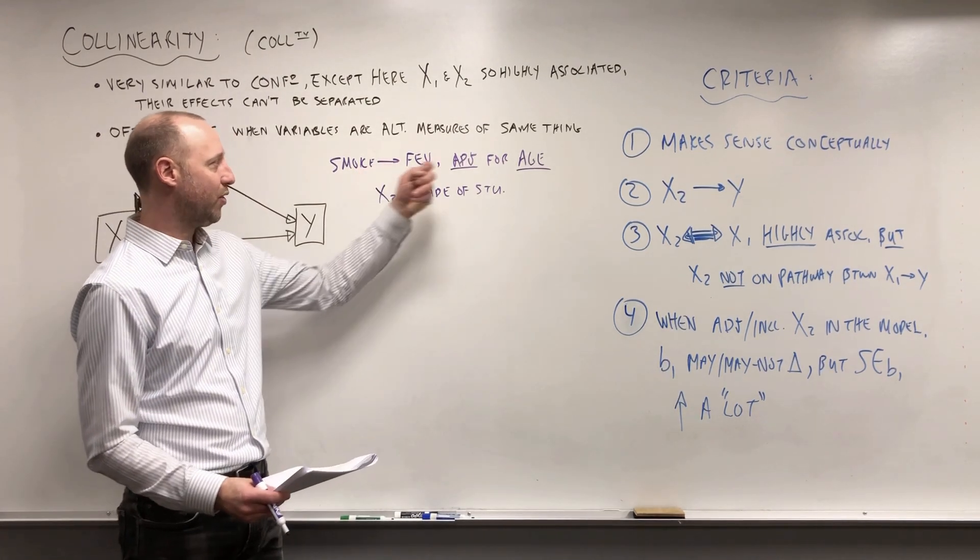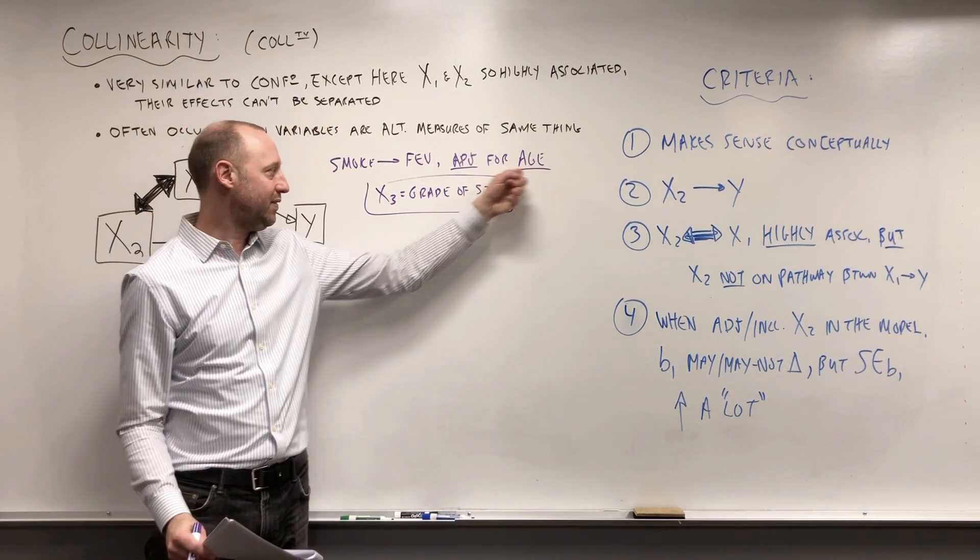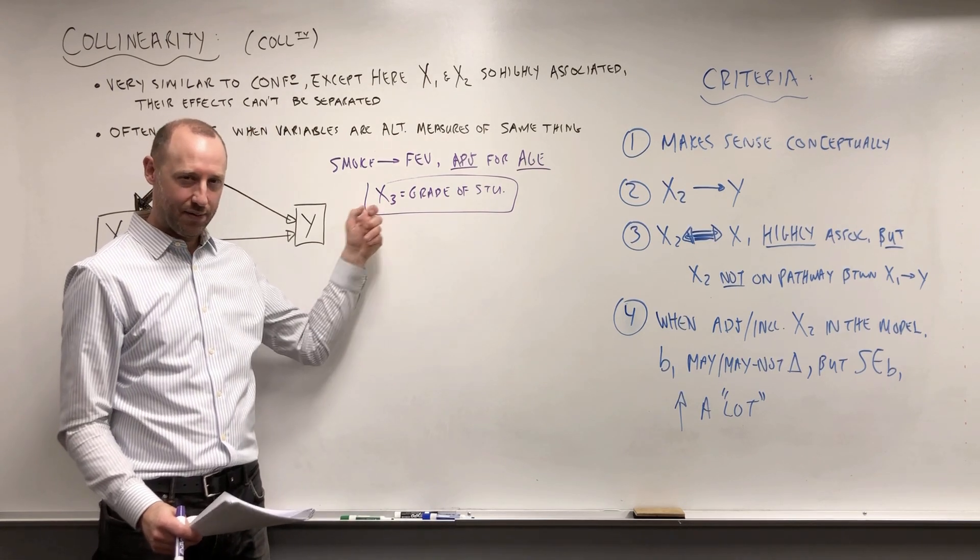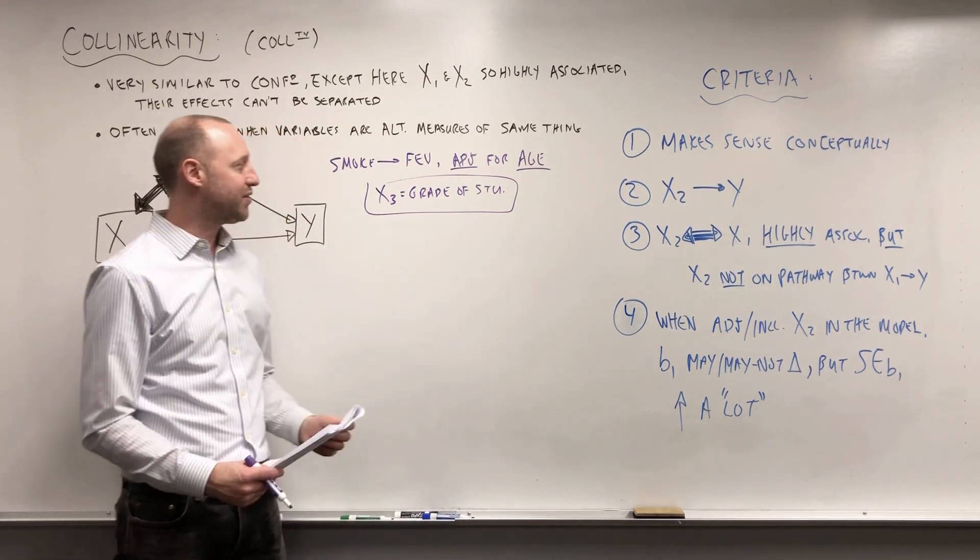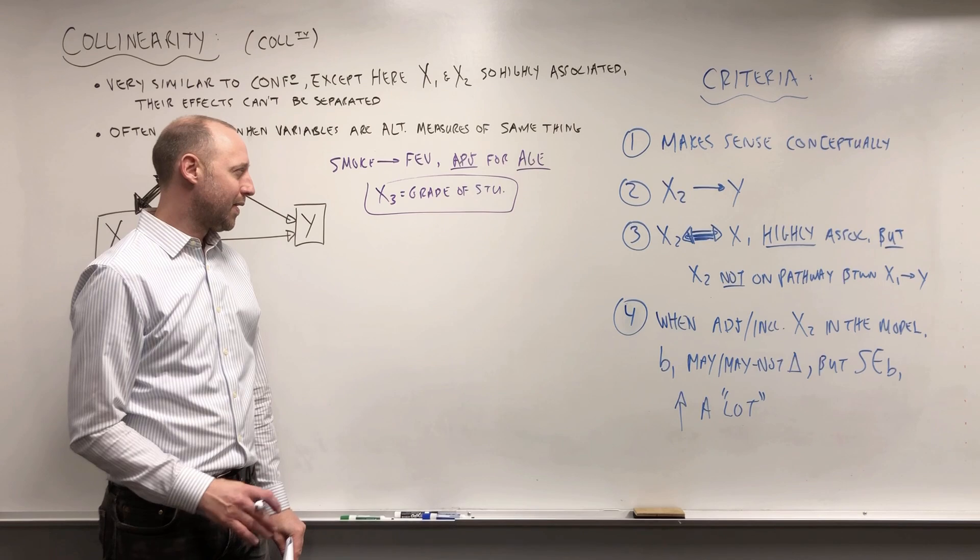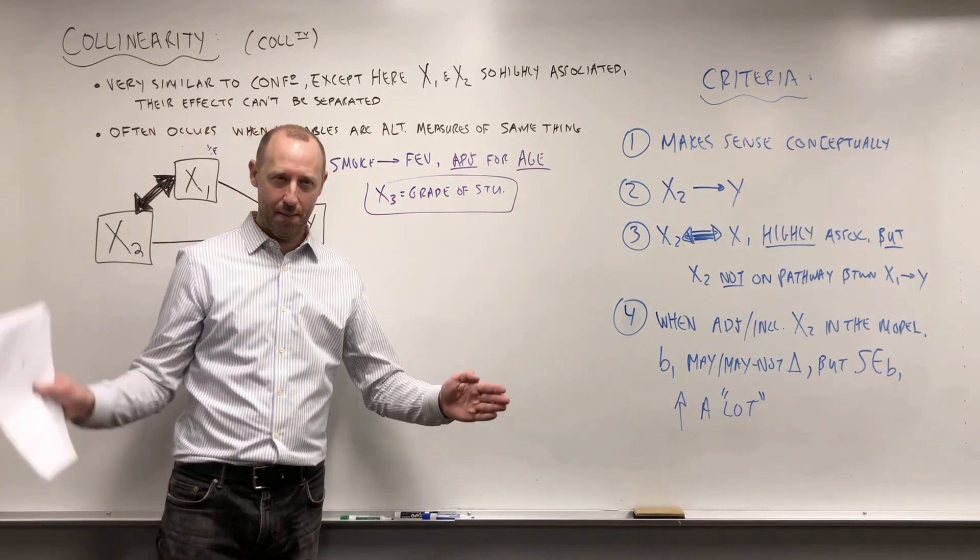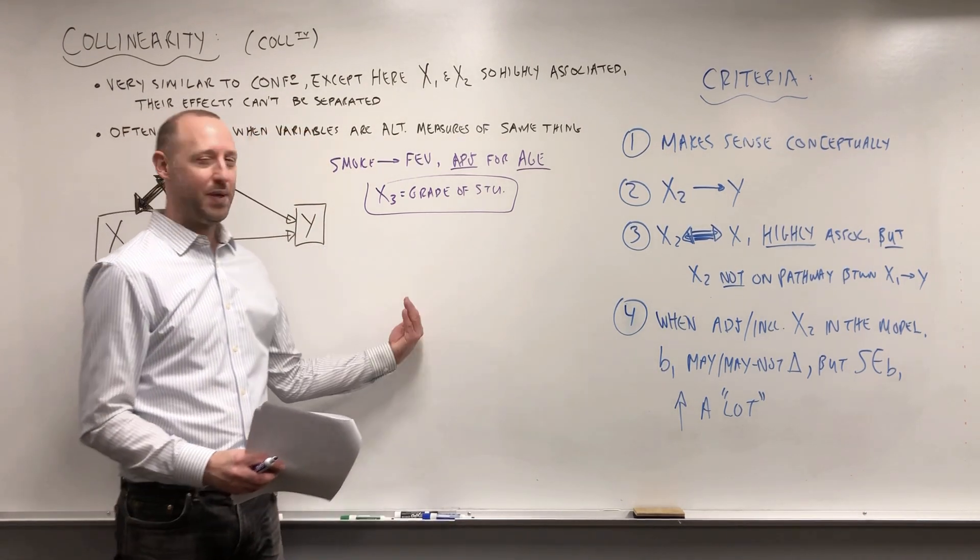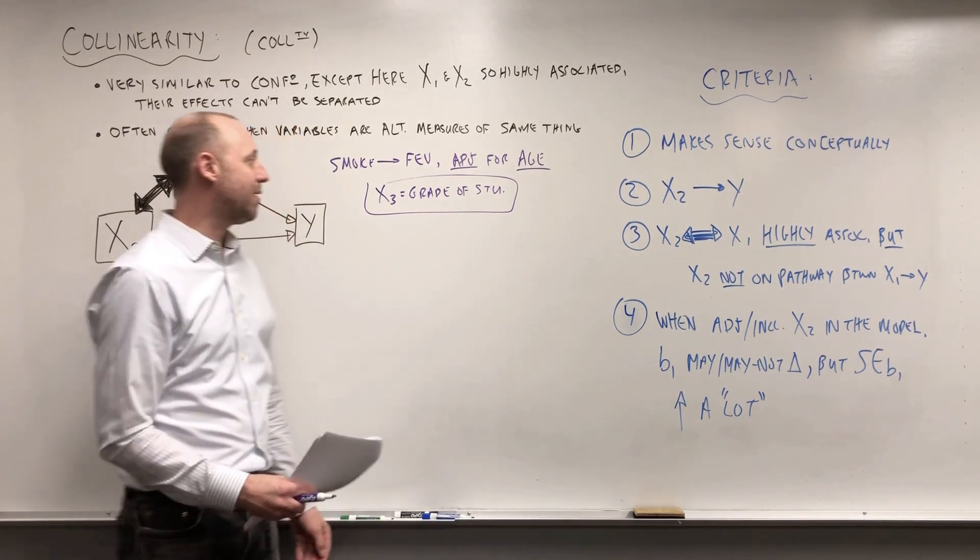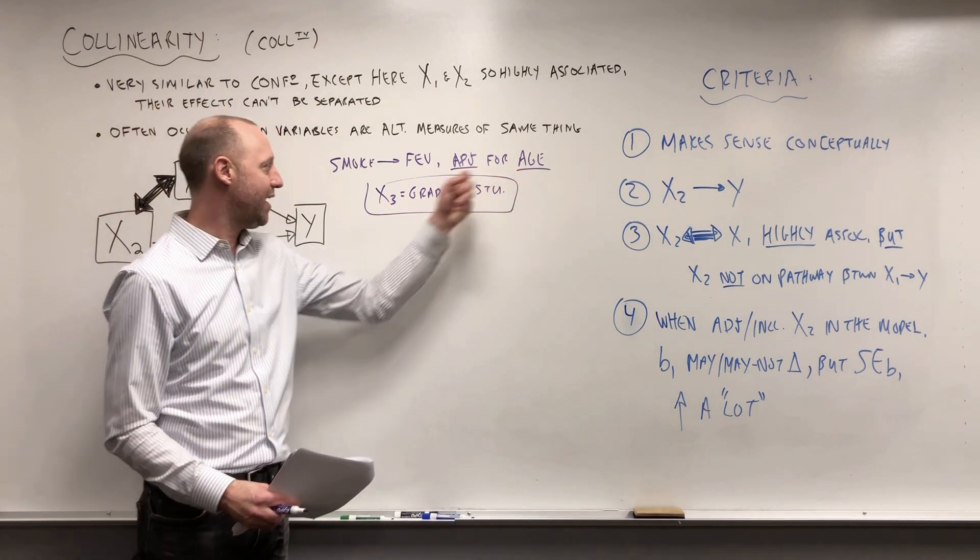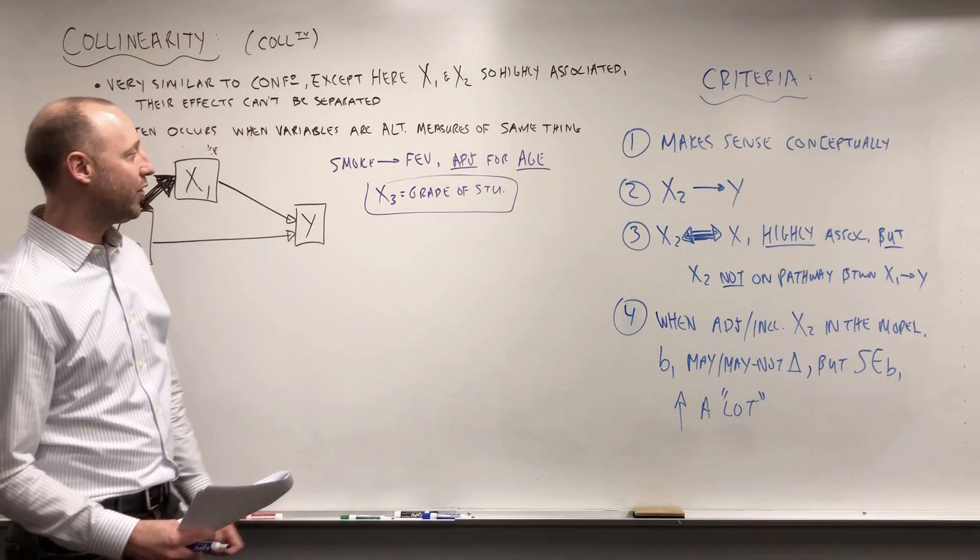If we want to adjust the smoke effect for age and we also have this other potential variable grade, the age of a student and the grade they're in are going to be highly associated. They're not exactly the same—some students skip ahead or behind, and ages change within a grade—but age and grade are so highly correlated that they're essentially collinear. We're going to want to only adjust for one of those two.